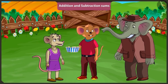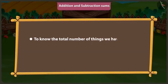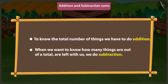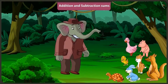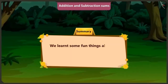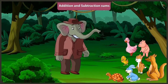Children, now you would have understood when to do addition and when to do subtraction. When we have to know the total number of things, we do addition. And when we have to know how many things are left from the total, we do subtraction. Friends, today we learned some interesting things related to addition and subtraction of two-digit numbers. In the next video, we will learn about tracing of things in our surroundings.